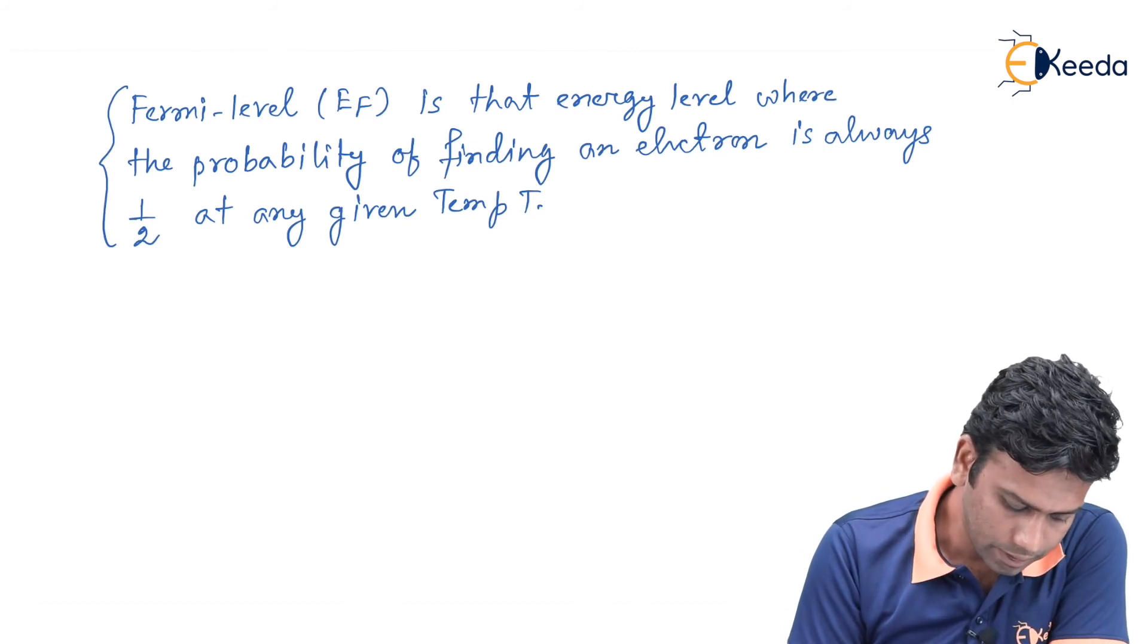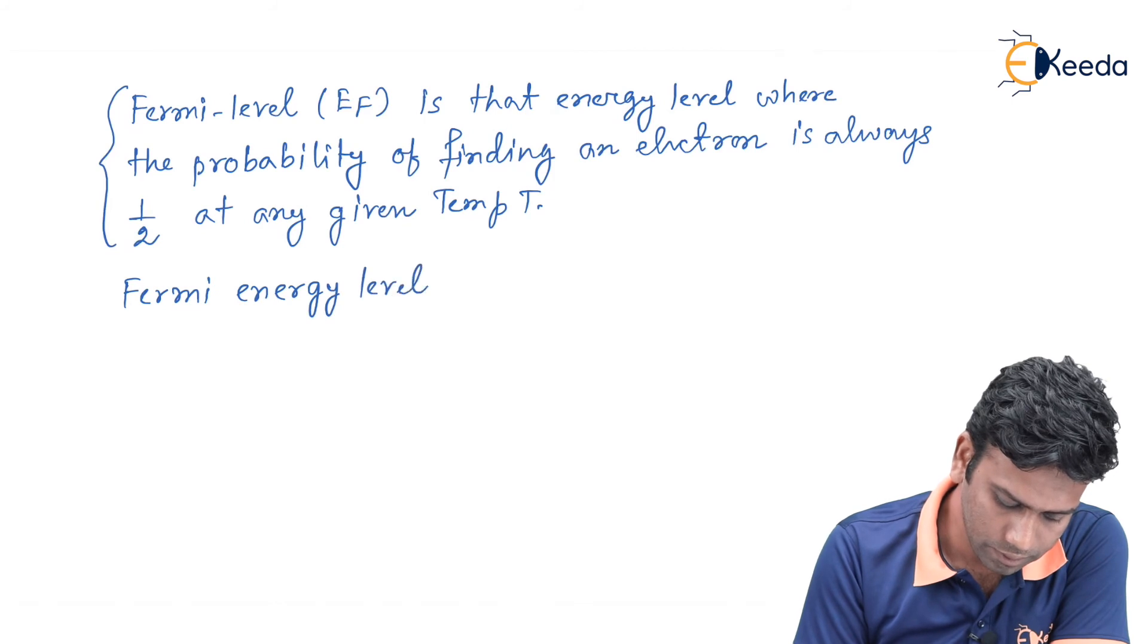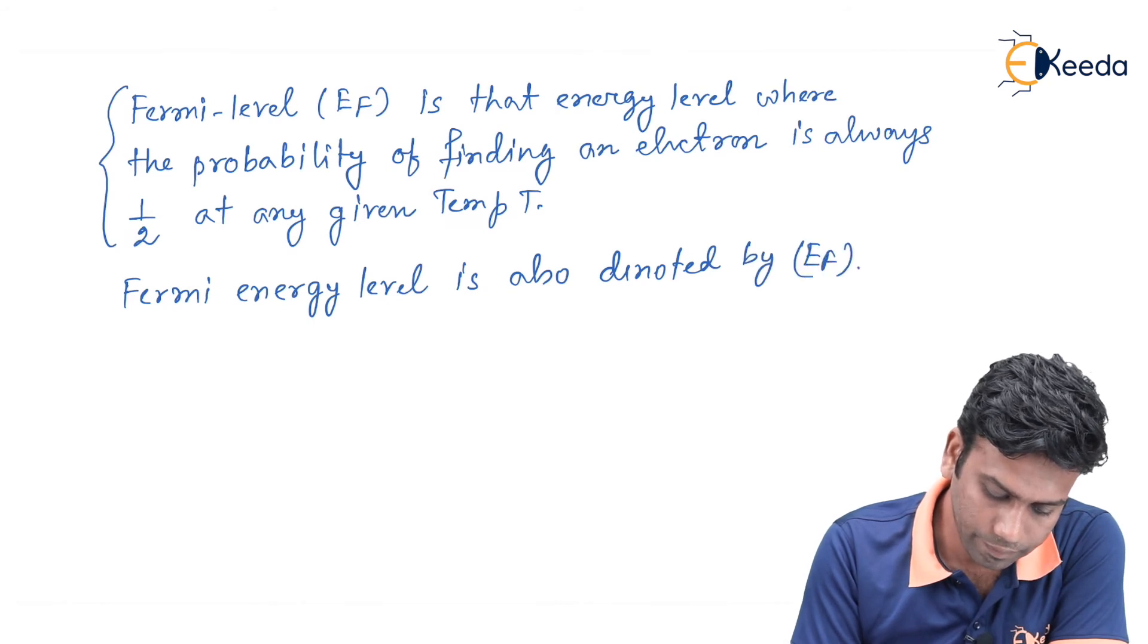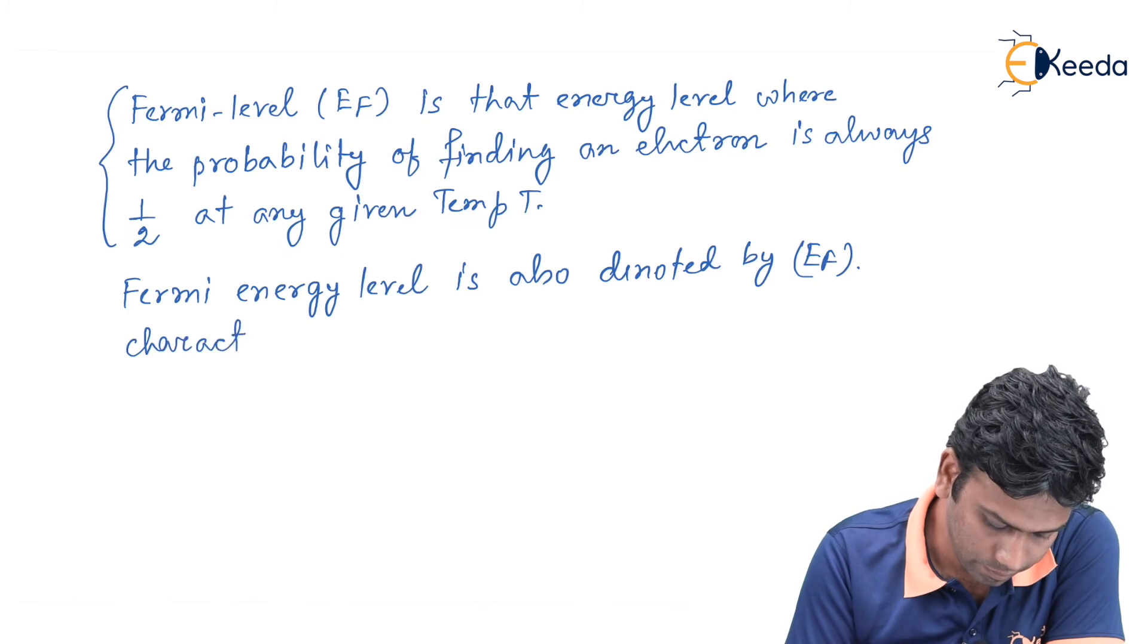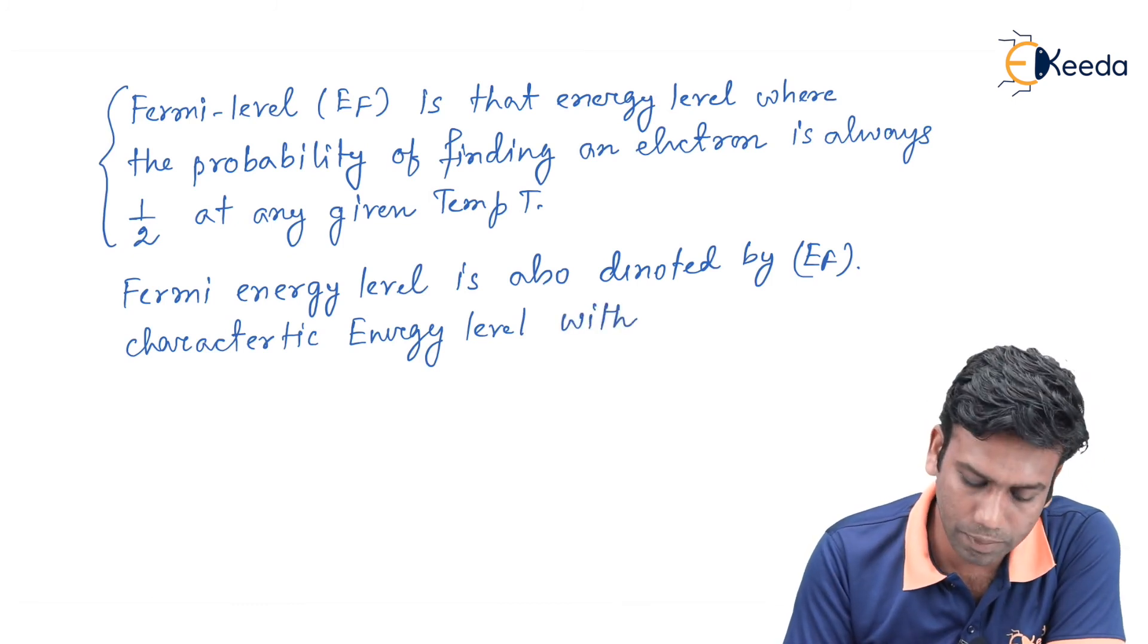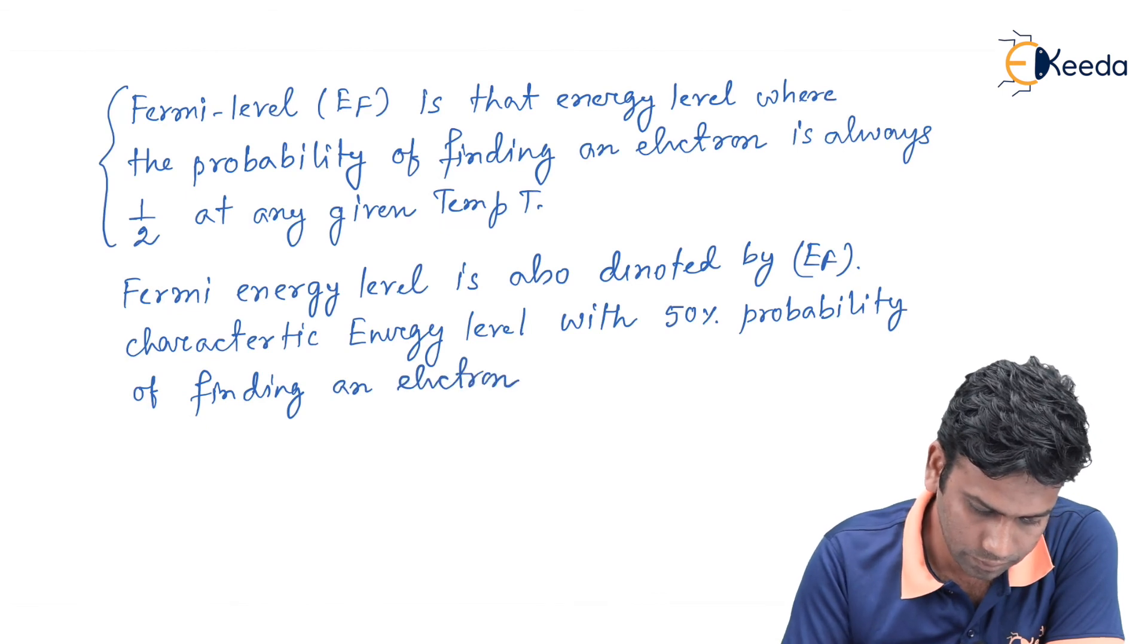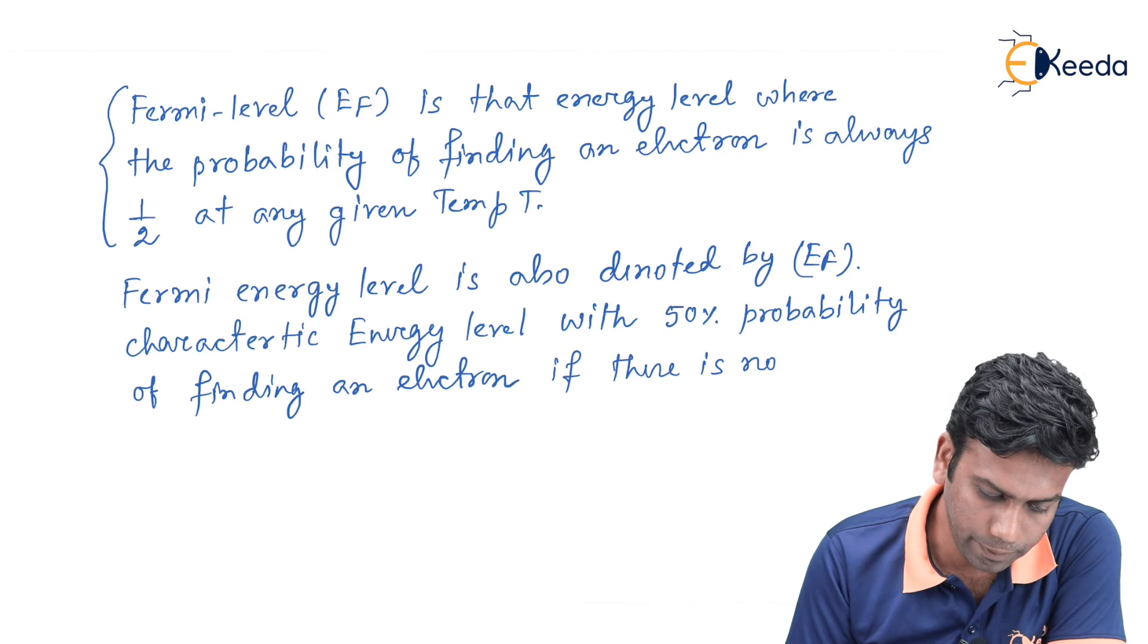The Fermi energy level is also denoted by Ef or it is called as a characteristic energy level with 50 percent probability of finding an electron if there is no forbidden band existing.